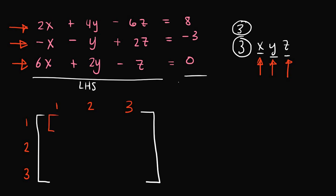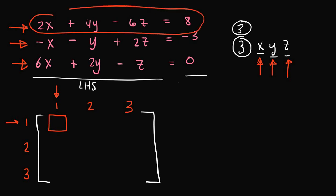Our (1,1) element is the number in the first row, which is the first equation, and the first unknown variable, which is x. The coefficient for the x term in the first equation is 2, so that goes in position (1,1). For the (2,1) element, row 2 corresponds to equation 2, and the first column corresponds to the x term coefficient, which is negative 1. For element (3,1), the coefficient for the x term in the third equation is 6.